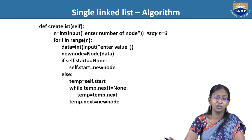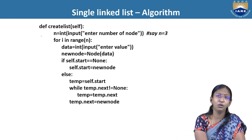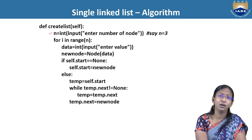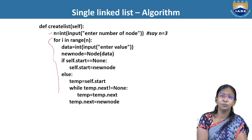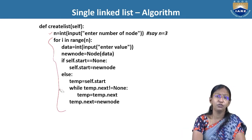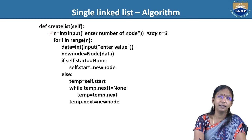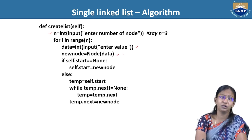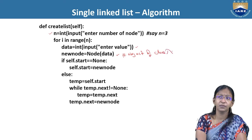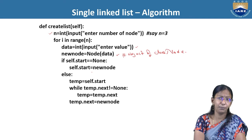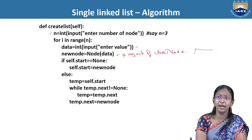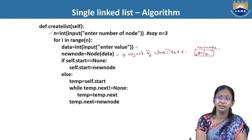Let's start with single linked list creation. Say we want to create a list with three nodes. We run a loop three times using 'for i in range(n)' where n is 3, so i takes values 0, 1, 2. For every iteration, we read a data value, then create a node object by calling the Node constructor with that data as a parameter. This creates a new node with the given data and its link part as None.